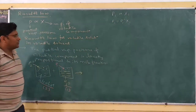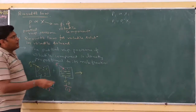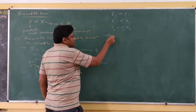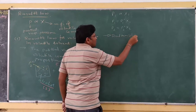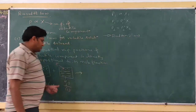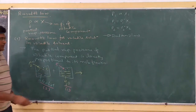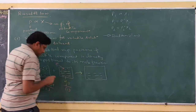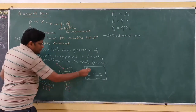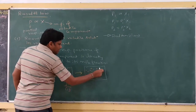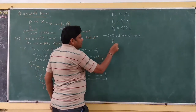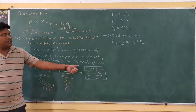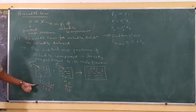So P1 equals P1° times x1. Now according to Raoult's Law, when we mix alcohol with water in one vessel, whatever the pressure exerted by the alcohol and whatever the pressure exerted by the water, P total is equal to P1 plus P2. The total vapor pressure is equal to the vapor pressure of water plus the vapor pressure of alcohol.